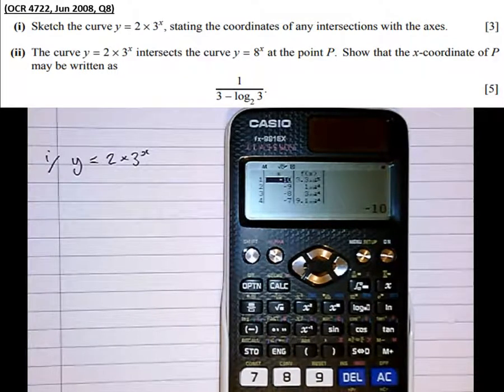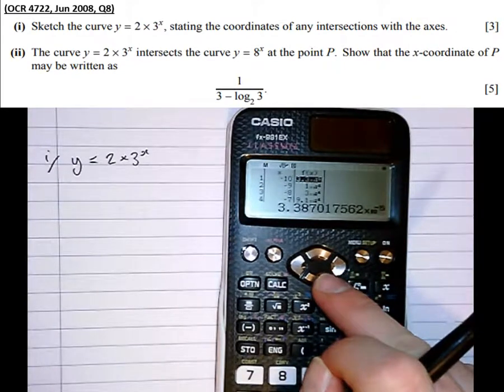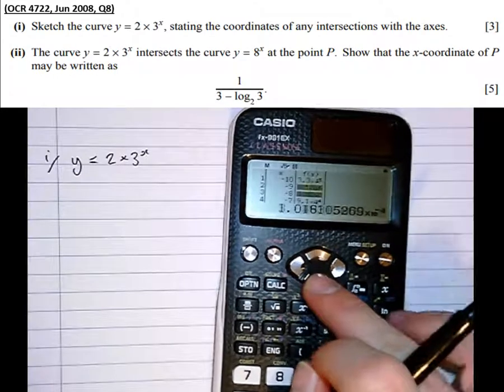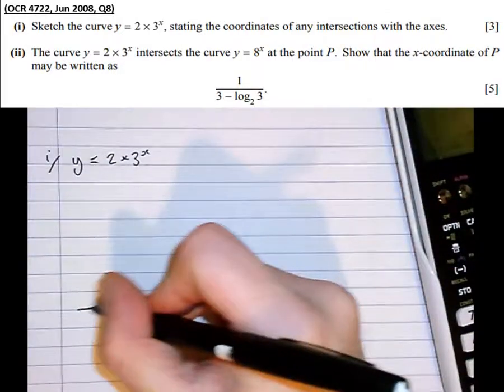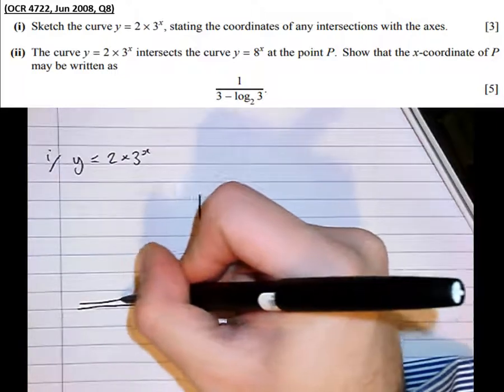We can see here that at minus 10, the number's very small: 3.387 times 10 to the negative 5. Still very, very small. So I know when the curve's very negative in terms of x, the y coordinates are very small.